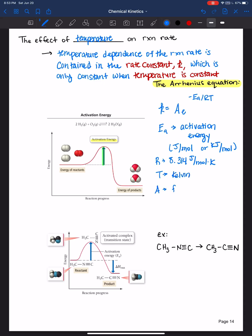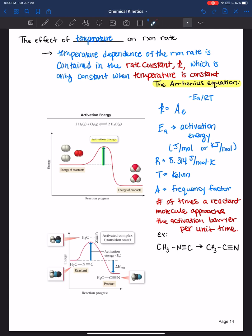And A is referred to as the frequency factor. That is defined as the number of times a reactant molecule approaches the activation barrier per unit time. So A is the frequency factor, it's the number of times a reactant molecule approaches the activation barrier per unit time.